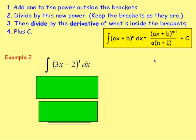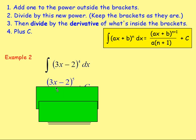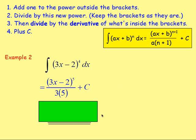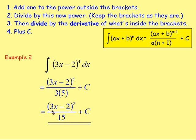Example 2: Integrate (3x − 2)^4. First, add 1 to the power, keeping the brackets as they are, giving (3x − 2)^5. We then divide by that new power — dividing by 5. We differentiate what's inside the brackets: 3x − 2 differentiates to become 3. We divide by the 3 as well, so on the bottom we have 5 times 3. Make sure you have plus c. Tidying up: 3 times 5 is 15, so the answer is (3x − 2)^5 over 15 plus c.